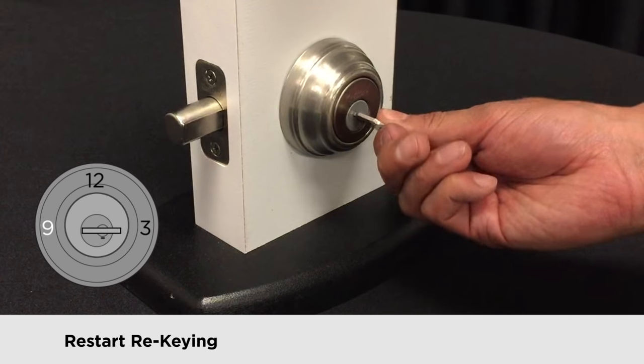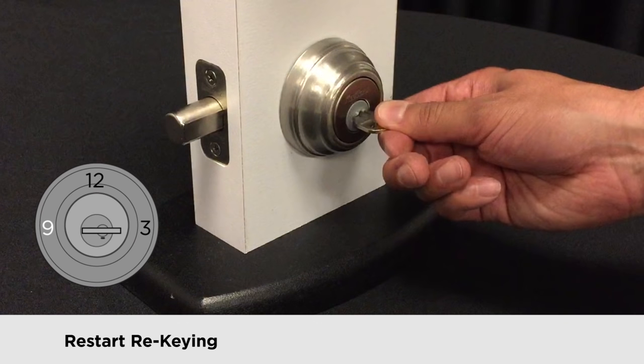Rotate the key to the 9 o'clock position without putting any pressure on the key. Don't push it in, up or down, and especially don't pull on it.